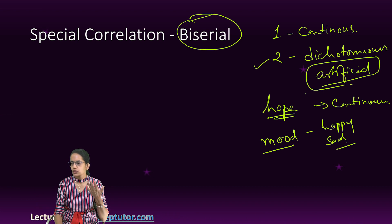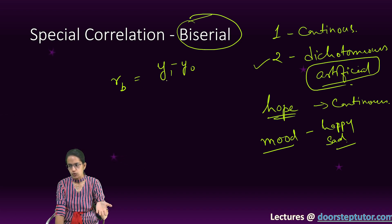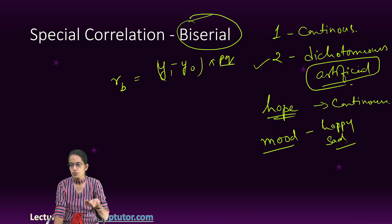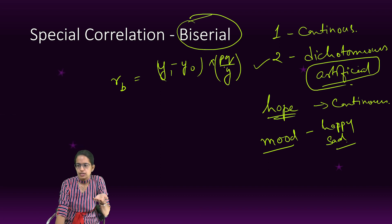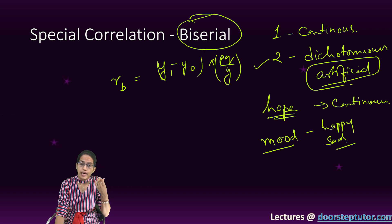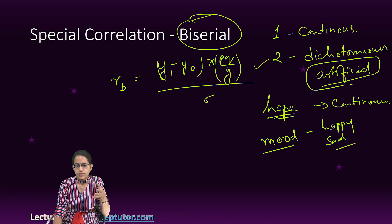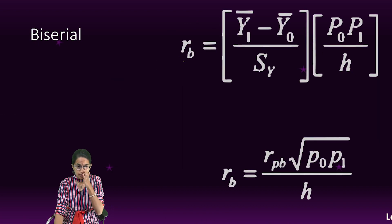Now, how do we find out the biserial correlation? The formula is: y1 minus y0, where y1 is the mean score where x is 1 and y0 is the mean score where x is 0, multiplied by pq divided by y. Here, p is the proportion of data pairs where x equals 0, and q is the proportion where x equals 1, divided by y — the whole divided by the standard deviation of the population. That's how we calculate the biserial correlation.